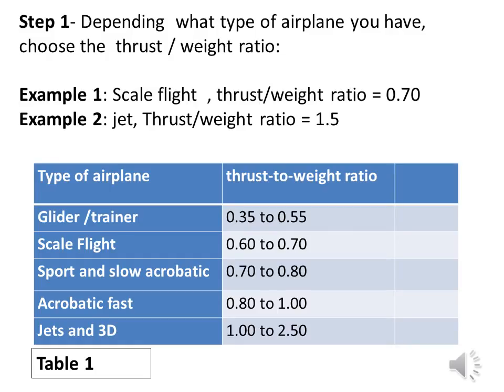Step 1: Depending on what type of airplane you have, choose the thrust-to-weight ratio. We will work with two examples at the same time. Example 1 — Scale flight: thrust-to-weight ratio equals 0.70. Example 2 — Jet: thrust-to-weight ratio equals 1.5.